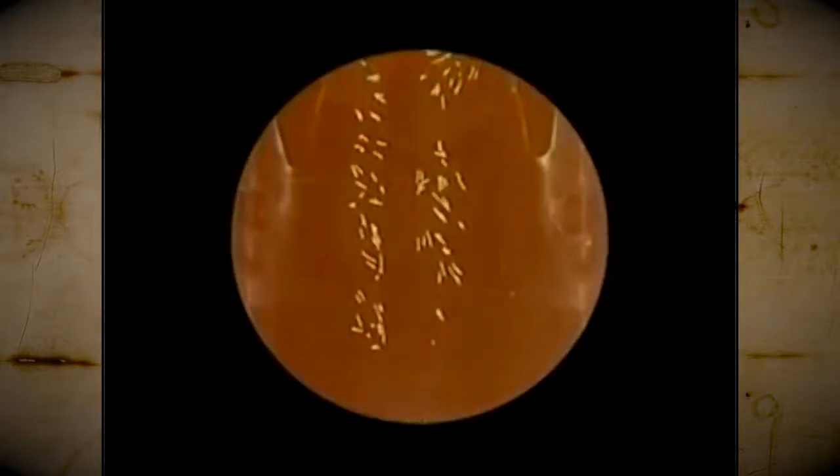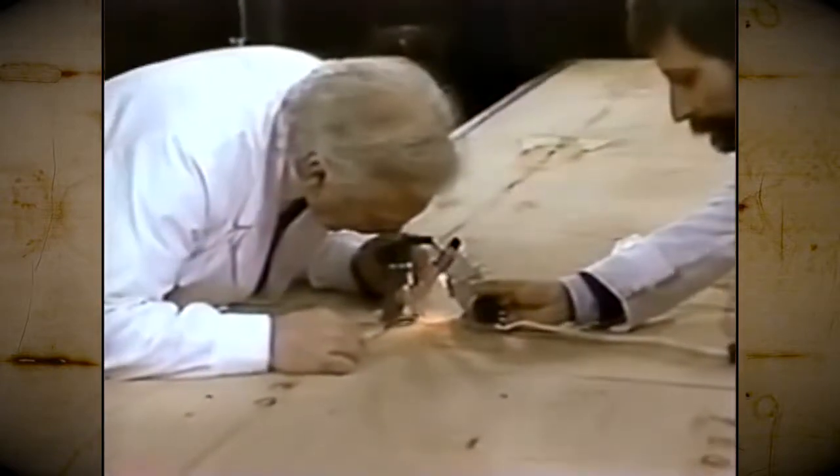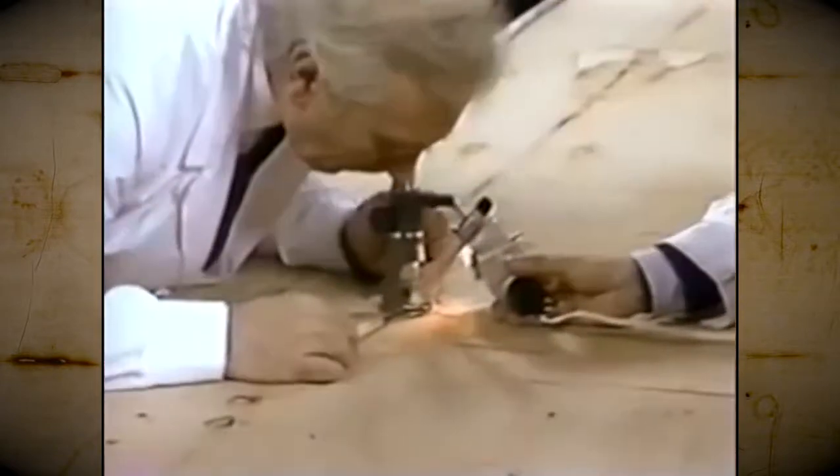There was considerable excitement when the 1978 investigative team released data that seemed to confirm the presence of blood on the shroud. Then, in 1988, blood samples were secretly lifted from the shroud by Giovanni Rigi di Lumana with the thought that they would eventually be tested.